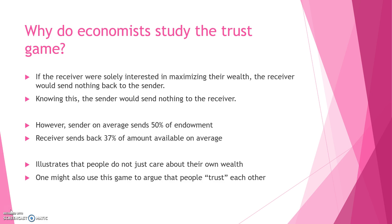However, economists have conducted over 100 Trust Game experiments and they found that, on average, the sender sends around 50% of his or her endowment. And the receiver sends back 37% of the amount available to him or her, on average. This illustrates that people do not just care about their own wealth — they care about other things, such as the wealth of other people.